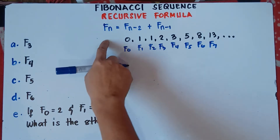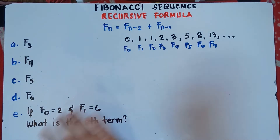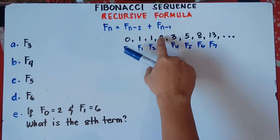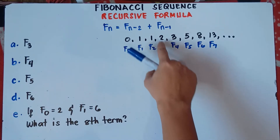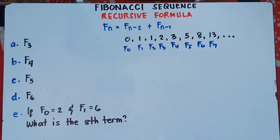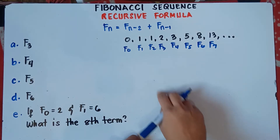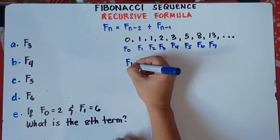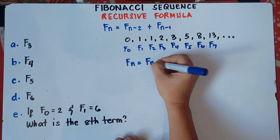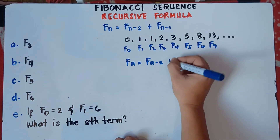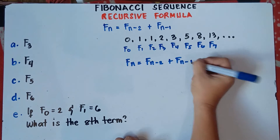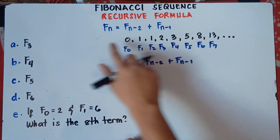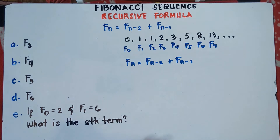So let's use this formula to find F sub 3. We already know, based on the patterns, that our F sub 3 is 2. So the answer for F sub 3 is 2. But how will you get the answer? This will be the formula — the equation, the solution. Now how do we get 2?